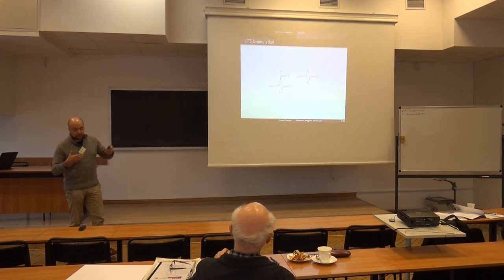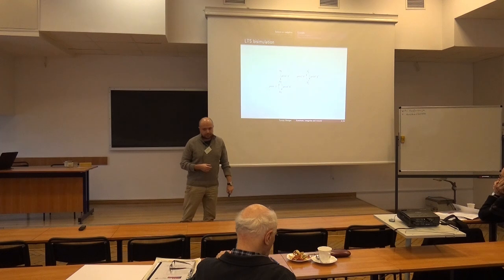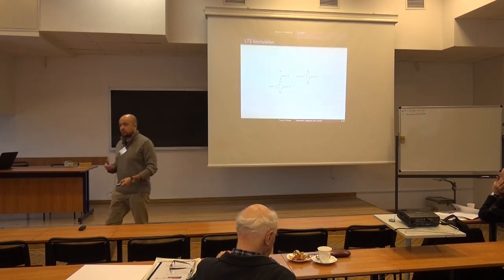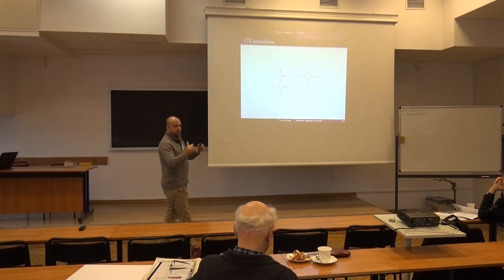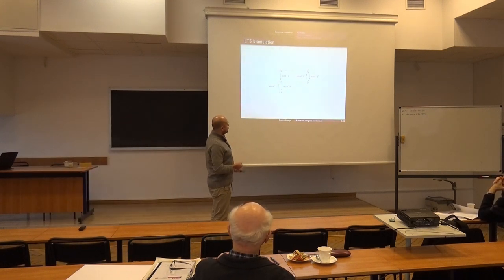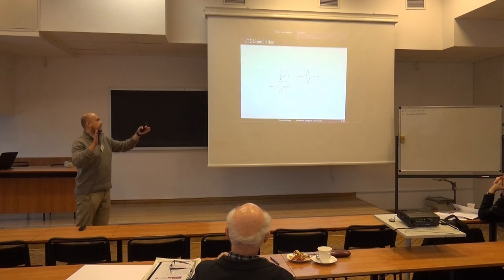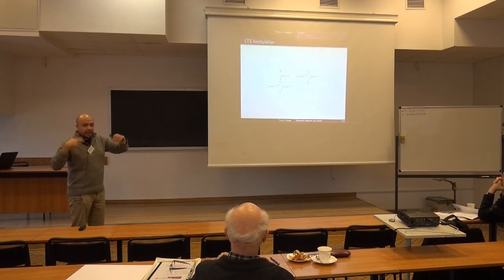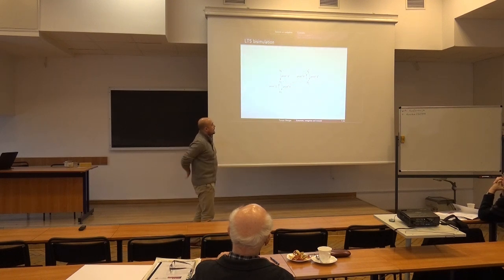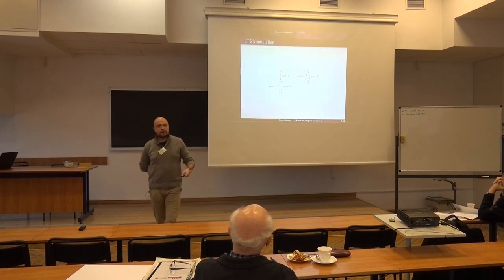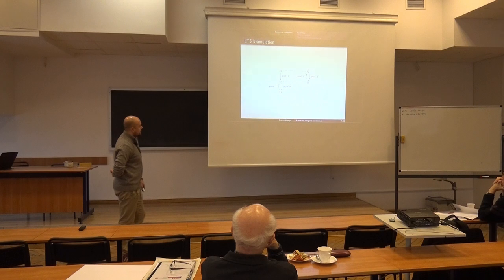This is a very specific example, yet we want to be able to say that these are two different transition systems, but they behave alike. So we introduce a notion of bisimulation. It's a relation which says that one state behaves like the other one — a very broad yet natural notion in this context. And where does category theory play a role here?